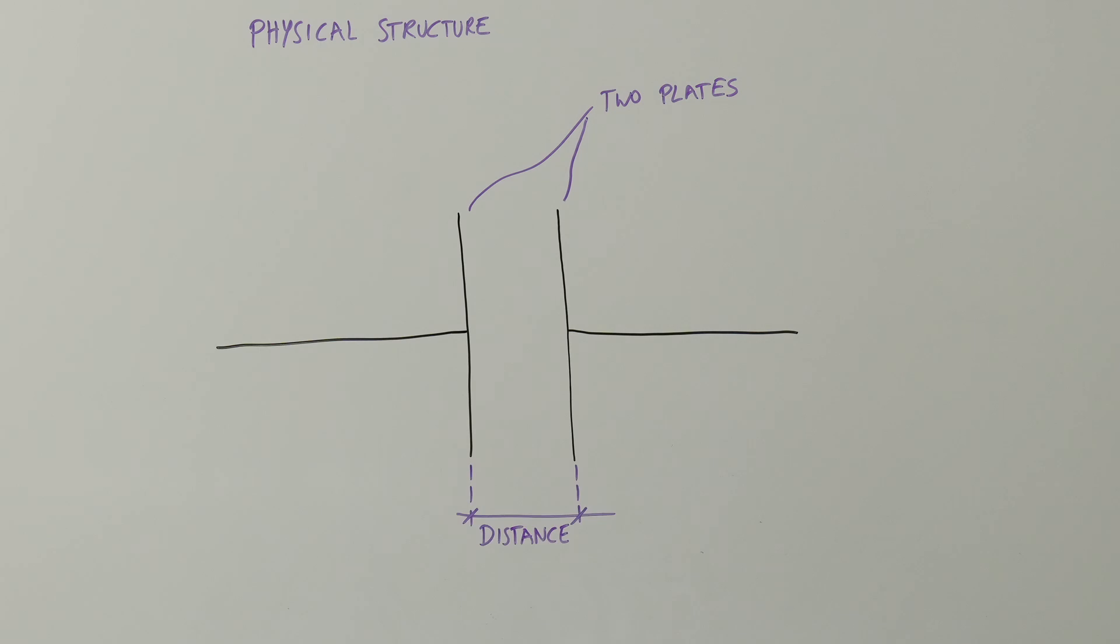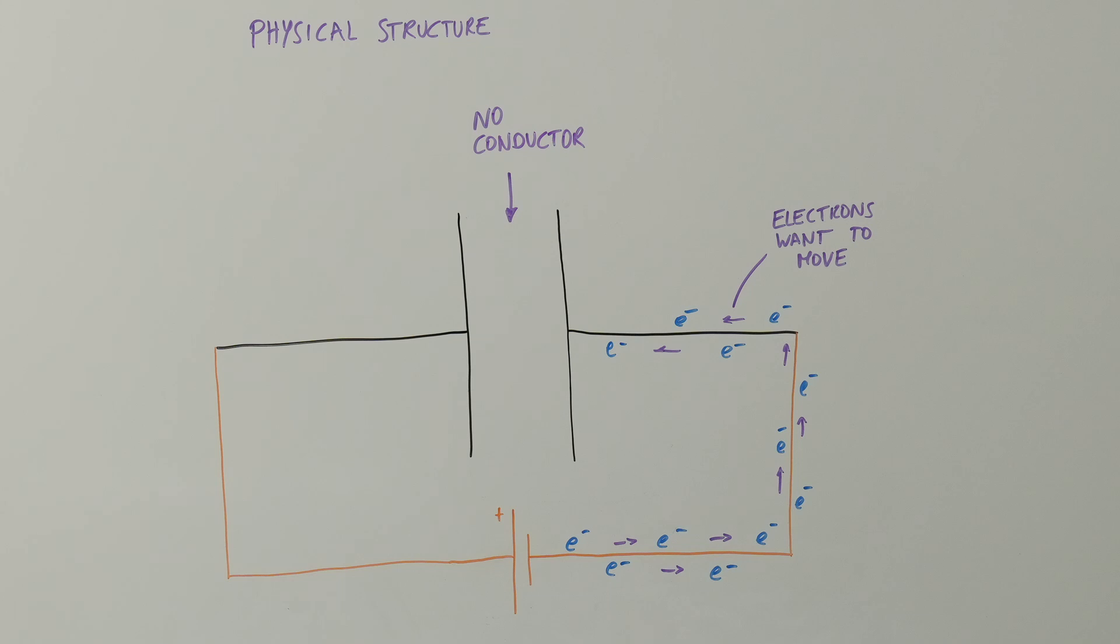When we apply a voltage to the two plates, the electrons want to move from the negative pole to the plus pole. Yet, the electrons can't move from the negative to the plus pole, as they are not connected through a conductor. The voltage still pushes the electrons from the minus pole to their attached plate. On there, they distribute equally, as equal charges repel each other.